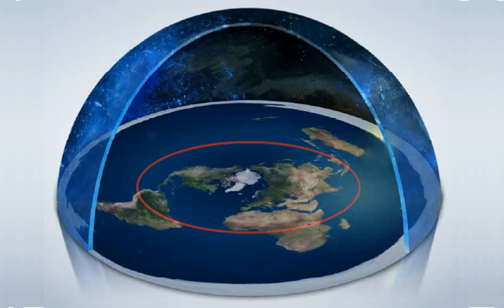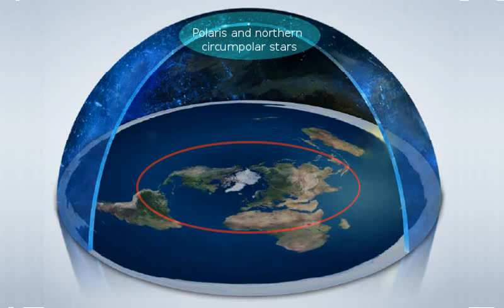In any flat Earth model, the stars would have to be arranged in a semispherical dome over the flat, circular Earth, and Polaris would have to be in the center. And that would seem to explain what we see in the north.